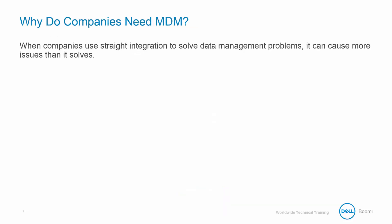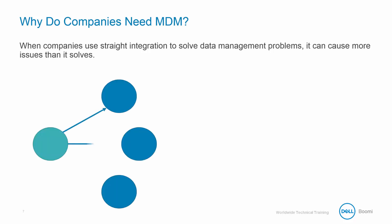So why does a company need MDM in the first place? In the integration world, we solve most of our problems through straight integration, essentially creating a process to move data around and compare it between source systems. Straight integration can solve some smaller data management issues, but even when sharing data between just a few sources, errors can occur. In order for a single source to verify that it has the same data as the rest of the sources it shares data with, it would need a separate process or branch to interact with each of the other sources. This same pattern happens for each additional source you need to share data with.